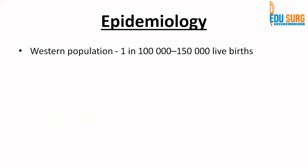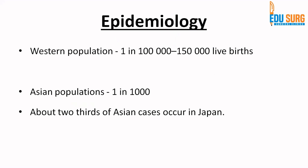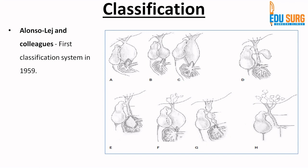Epidemiologically, in the western population, the incidence of choledocal cysts is less — 1 in 100,000 to 150,000 live births — whereas in the Asian population it is 1 in 1,000. Choledocal cysts are more common in the Asian population and two-thirds of cases occur in Japan. Female to male ratio is another common exam question: females are more commonly affected at a ratio of 4:1 or 3:1.